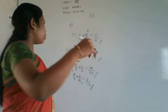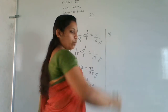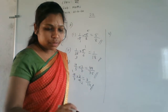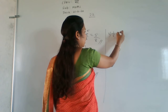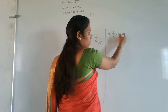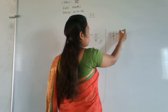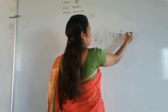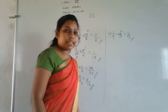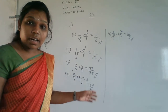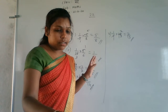Fifth question: 1/5 × 10/13. Cancel 5 and 10: 5 ones are 5, 5 twos are 10. Remaining: 1×2=2 in numerator and 1×13=13 in denominator. Answer is 2/13.